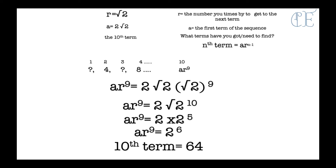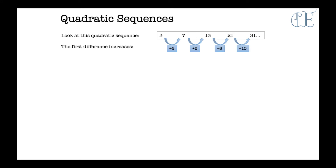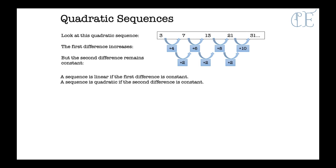Let's move on to quadratic sequences. Looking at this sequence, you can see it's going up in different values every time: plus 4, plus 6, plus 8, and plus 10. A quadratic sequence has a first difference that always increases, but the second difference always remains the same — it remains constant. A sequence is linear if the first difference is constant, and quadratic if the second difference is constant.